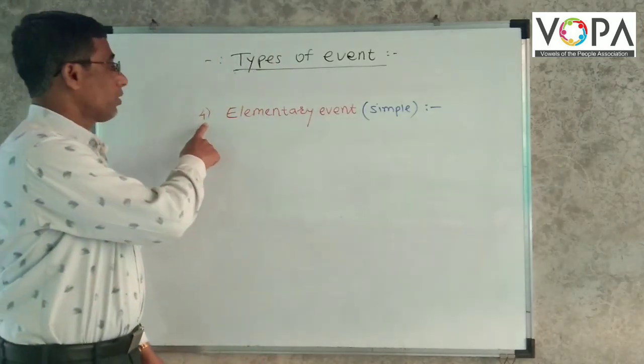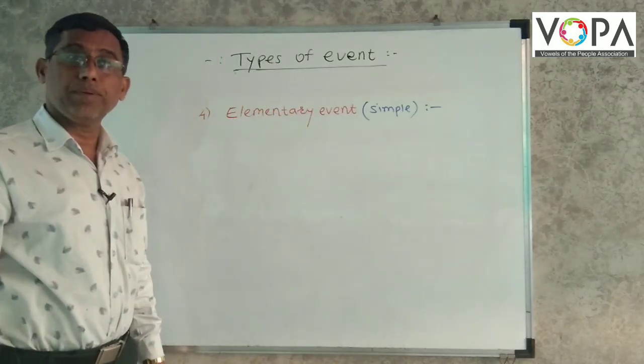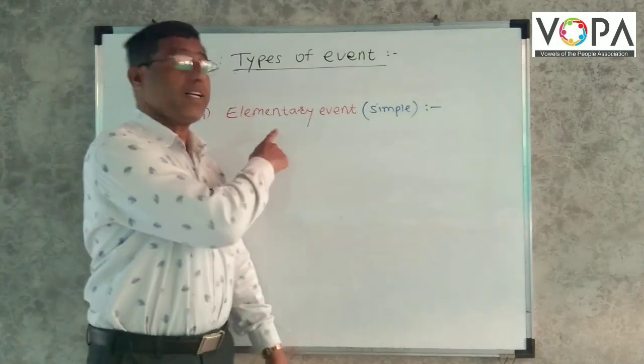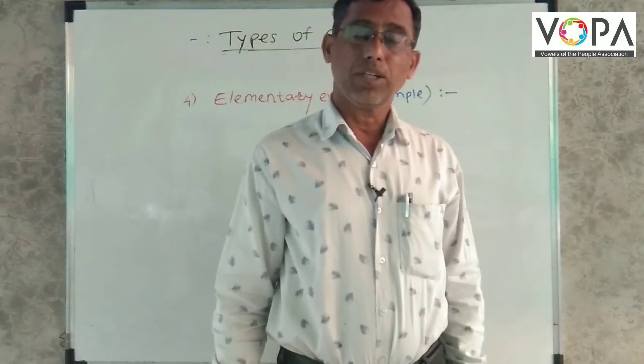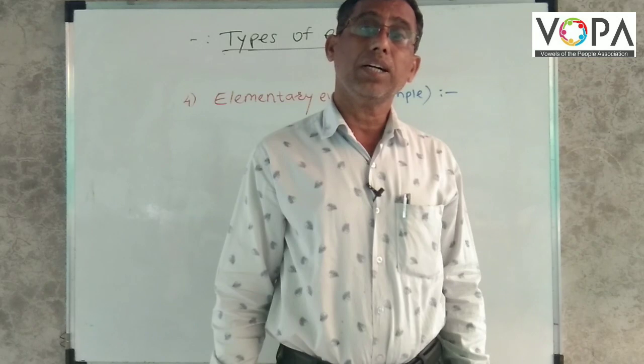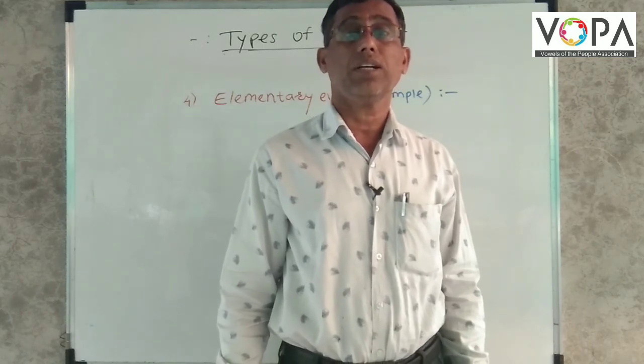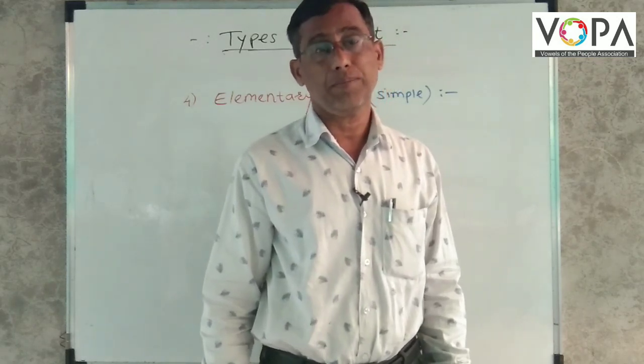Now we take fourth elementary event or simple event. What is an elementary event? An outcome which comes in a random experiment is called an elementary event or simple event.